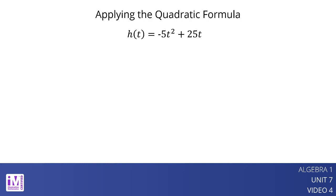Function h models the height of an object in meters t seconds after it is launched into the air. To know how much time it would take the object to reach 15 meters, we could solve the equation 15 equals negative 5t squared plus 25t. How should we do it?